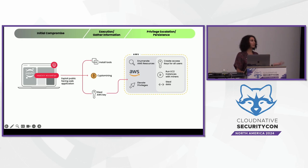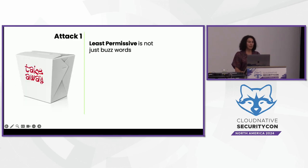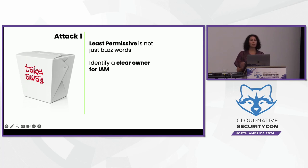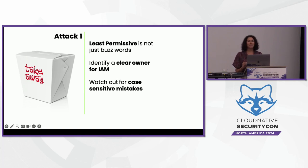The victim was trying to do the right thing with a least-permissive policy to block this critical action, but it was a tiny typo that messed it up. Least permissive is not just a buzzword — you want to be reducing the scope of permissions all your users and machine identities can access. It's also really important to identify a clear owner for IAM in your organization. It could be IT or ops — what matters is that someone owns it and is responsible for catching these types of mistakes, because someone needs to invest in learning all the intricacies of each cloud provider.